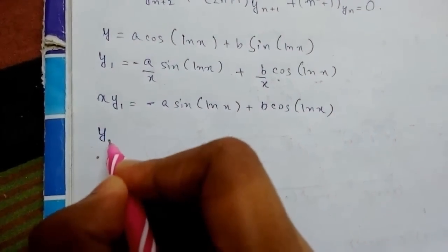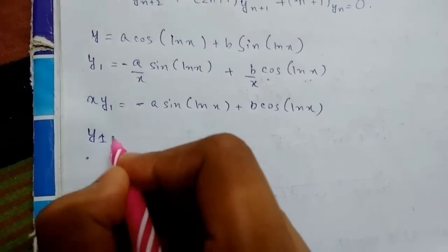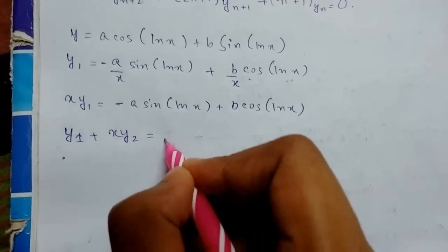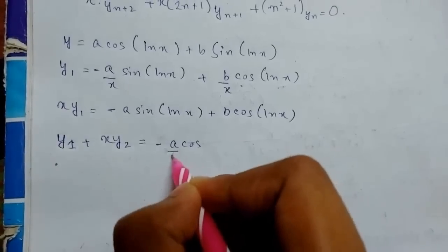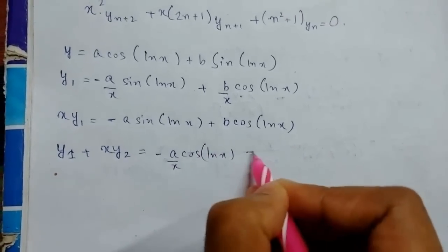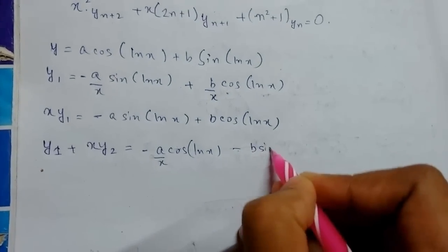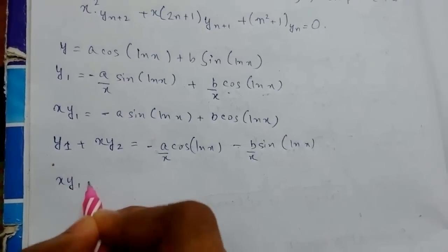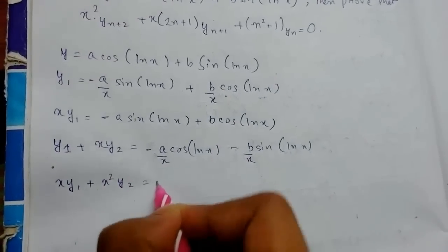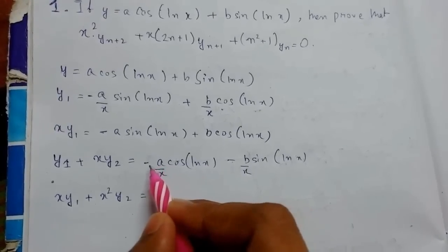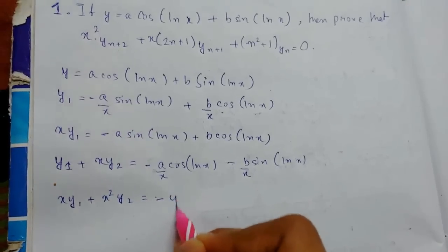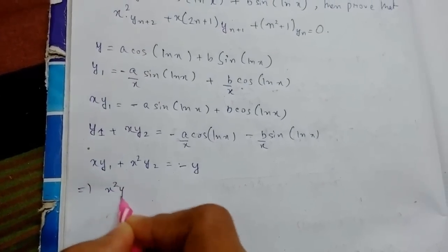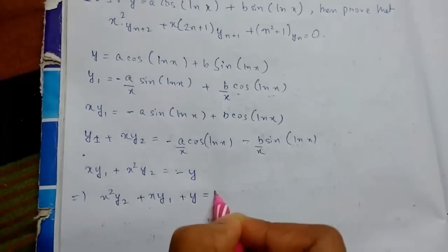Differentiating again: x·y₁ + x²·y₂ equals the derivative of the right side, which gives −a·cos(ln x)·(1/x) − b·sin(ln x)·(1/x). Bringing x to this side: x·y₁ + x²·y₂ = −y. We can observe that the right-hand term is simply −y, so rearranging and bringing all terms to the left-hand side gives x²·y₂ + x·y₁ + y = 0.